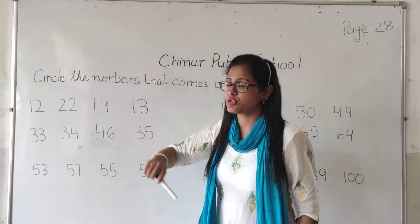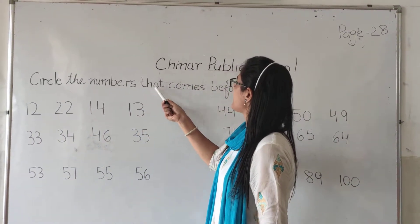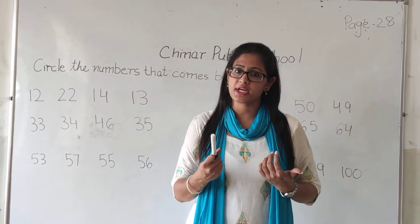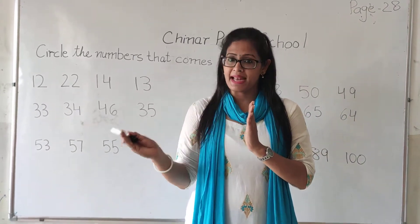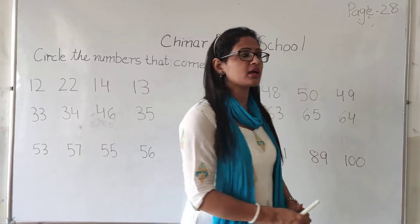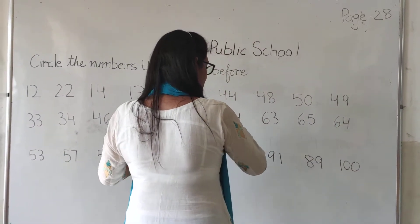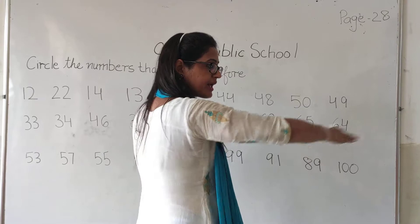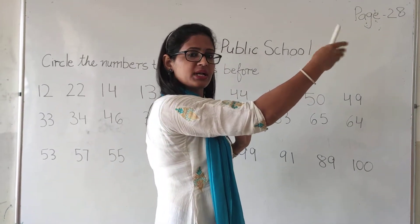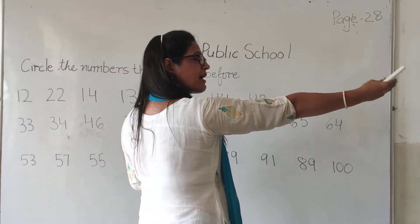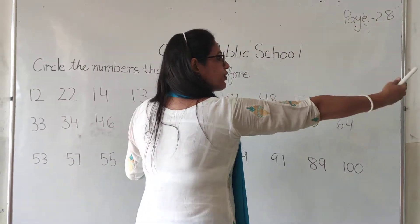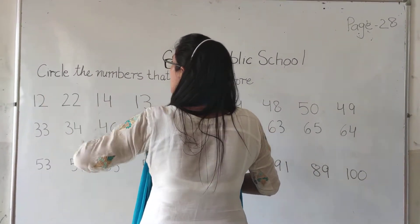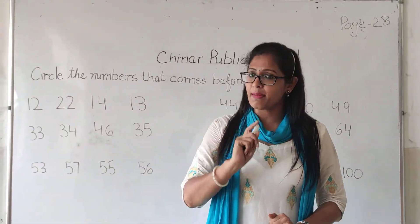What you have to do is circle the numbers that come before. We have to identify which number comes before. Before means before. Like, if we have someone counting: one, two, three, four — going forward. But to find what comes before, we will go back, we will reverse. Ulta: four, three, two, one. If we do 'before', we will reverse.